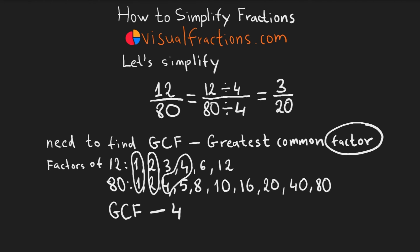This gives us our simplified fraction, 3 20ths. And there you have it. We've taken the fraction 12 80ths and reduced it to its simplest form, which is 3 20ths, all by finding the greatest common factor.